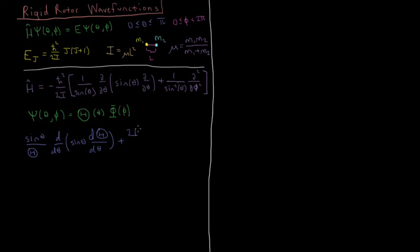Plus 2 I E over h-bar squared times sine squared theta, and this all equals some constant, which we could perhaps call m squared if we wanted to. Reasons may be seen later why.